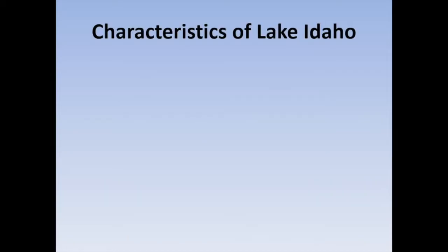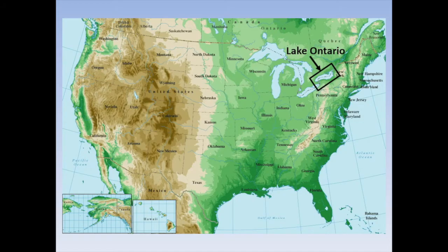Let's look at some of the main features of Lake Idaho. First, this was a very large lake with a surface area at its maximum of about 7,000 square miles, which would make it about the same size as current-day Lake Ontario of the Great Lakes. Lake Ontario is the easternmost and smallest of the five Great Lakes. If ancient Lake Idaho at its maximum size existed today, it would be the largest body of water in the western United States — with a surface area nearly four times the size of the present-day Great Salt Lake in Utah.